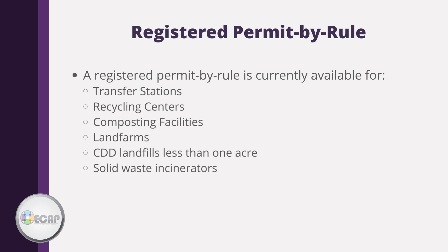Here we see some of the categories for which a registered permit by rule is currently available. These include transfer stations, recycling centers, composting facilities, land farms, construction and demolition debris landfills less than one acre in size, and solid waste incinerators. There are also common activities considered to be under a permit by rule that do not require a registration, such as burying construction and demolition debris on site if all requirements are met.